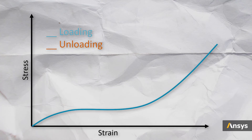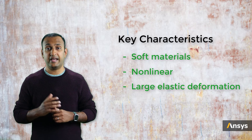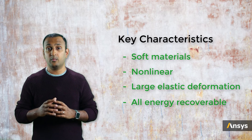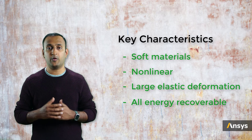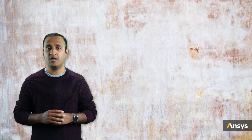Since they mostly undergo elastic deformation, they follow the same path during both loading and unloading. This also means that the energy is conserved — the work done in deforming them is all stored as internal energy and is fully recoverable upon unloading. Most hyper-elastic materials such as rubbers and soft tissues are nearly or fully incompressible. But other materials such as foams and sponges, which are compressible, can also be modeled as hyper-elastic materials using a special class of hyper-elastic models.